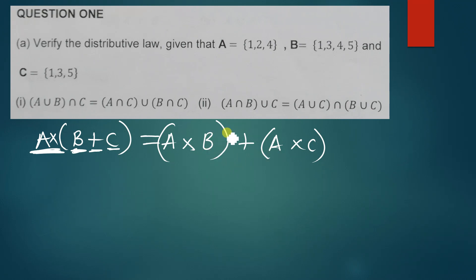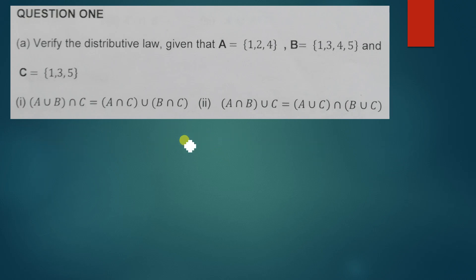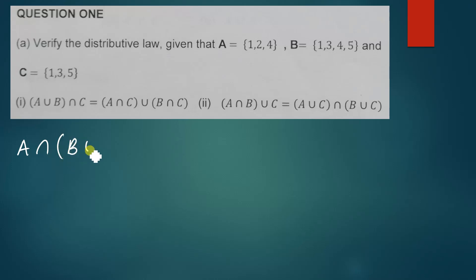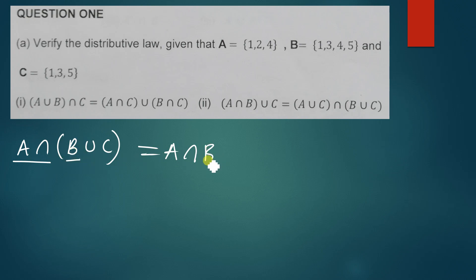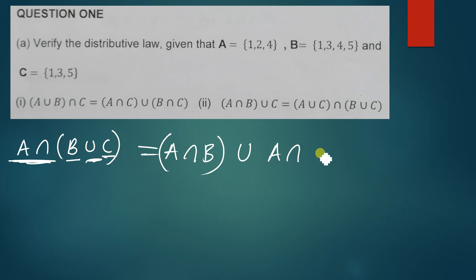Now let us put this in terms of sets. You can have three sets written as A intersection, then B union C, and they ask you to distribute this. So you get A intersection B, in brackets, union A intersection C, in brackets. This is how you distribute in set notation.